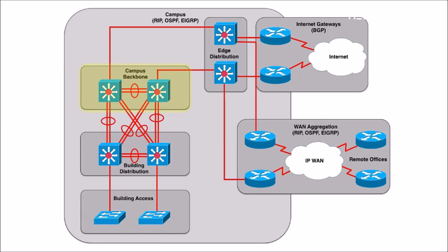The multi-layer switches at the building distribution layer connect up to the campus backbone. The campus backbone is probably going to have a higher-end multi-layer switch, and it is really concerned with speed — how quickly can we get a packet from one building distribution layer multi-layer switch to another? Typically, all of the network traffic happening within our headquarters location is going to be in one of these three layers.